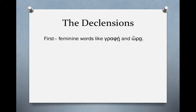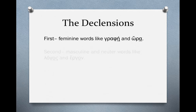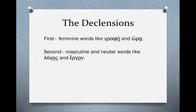Let's review what the declensions are. The word 'declension' is just a fancy term which describes word formation. First declension nouns refer to feminine words like graphē and hōra — the stem vowel is underlined — because the first declension refers to feminine words whose stem ends in an eta or an alpha. Second declension nouns refer to masculine and neuter words like logos and ergon, and both have their stem vowel as omicron.